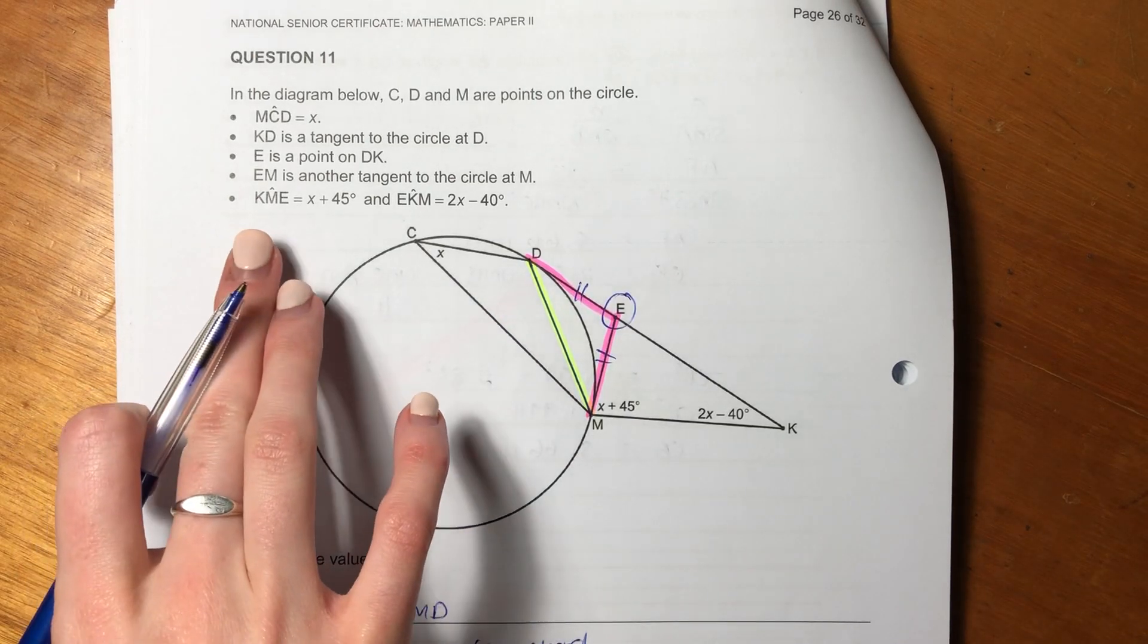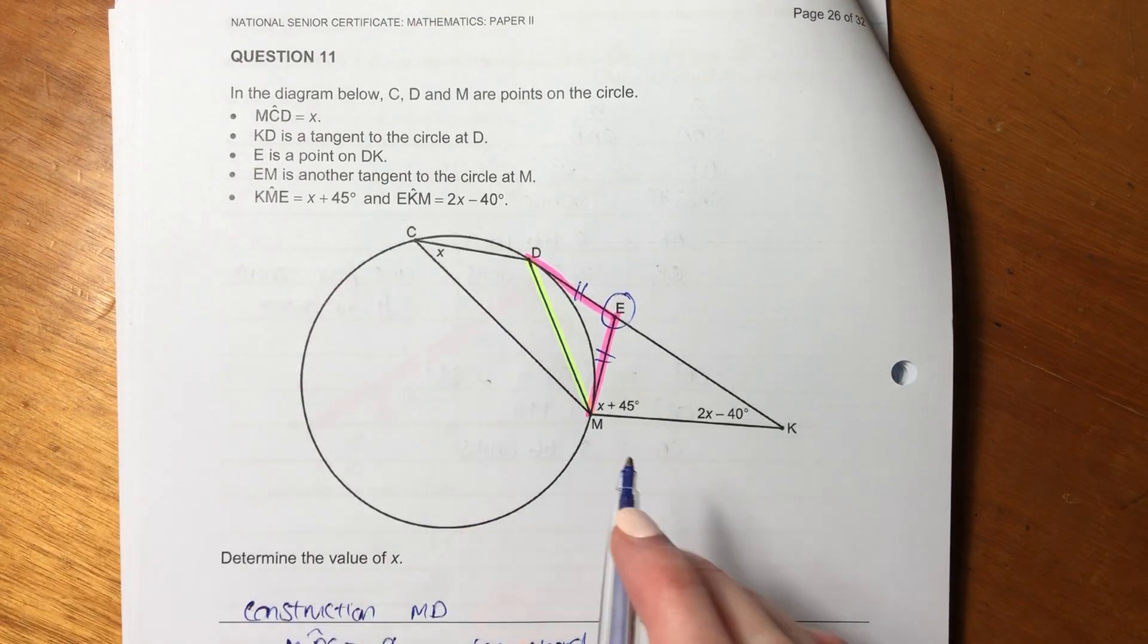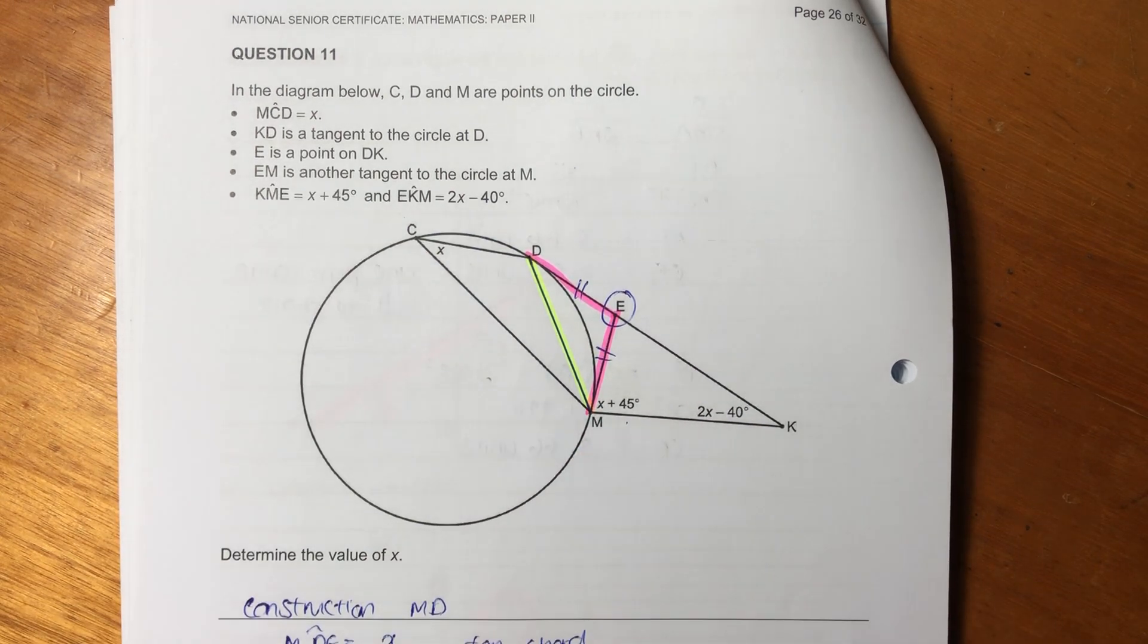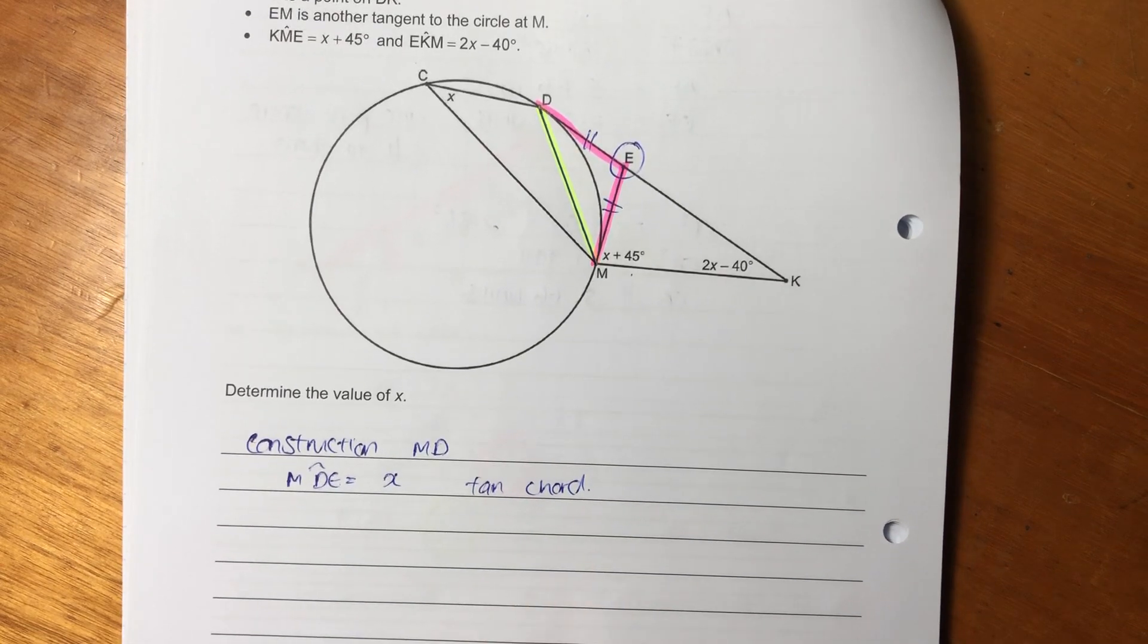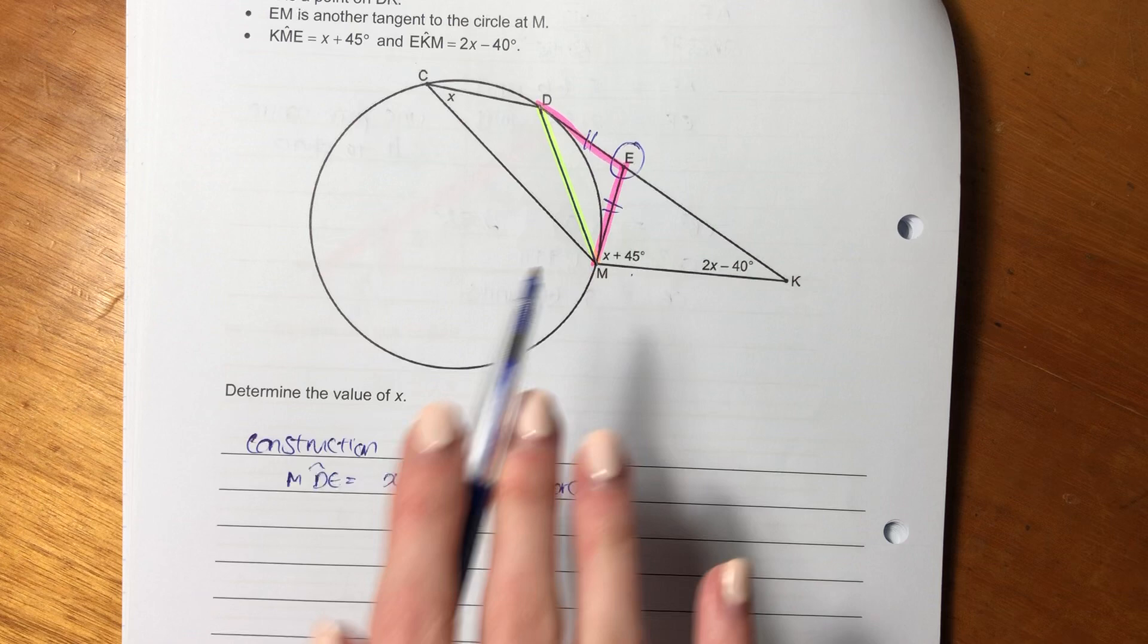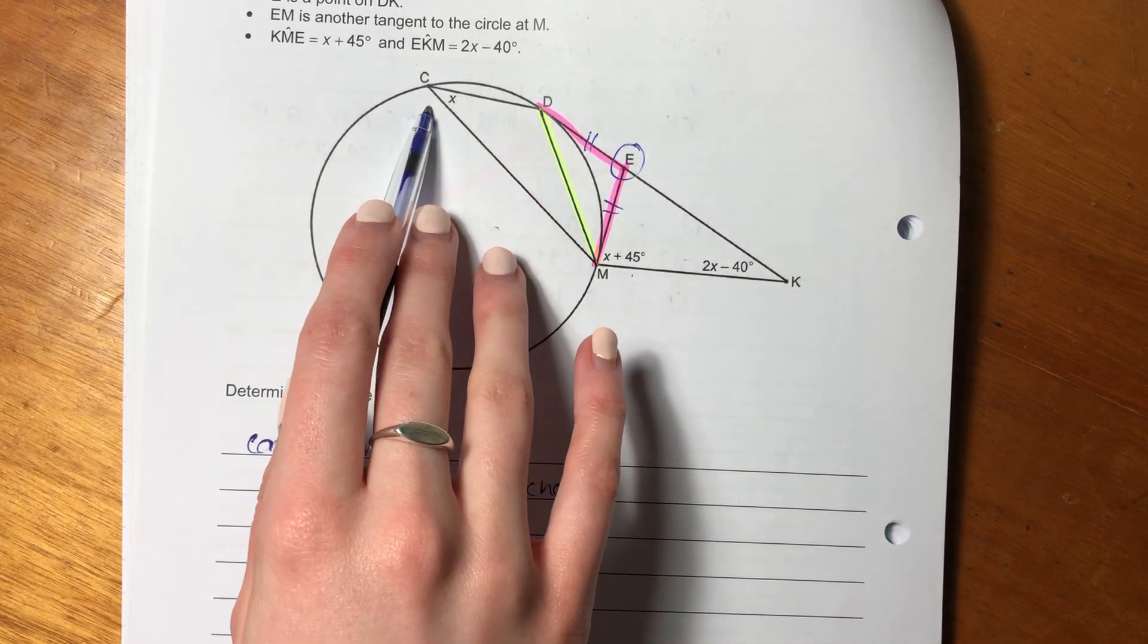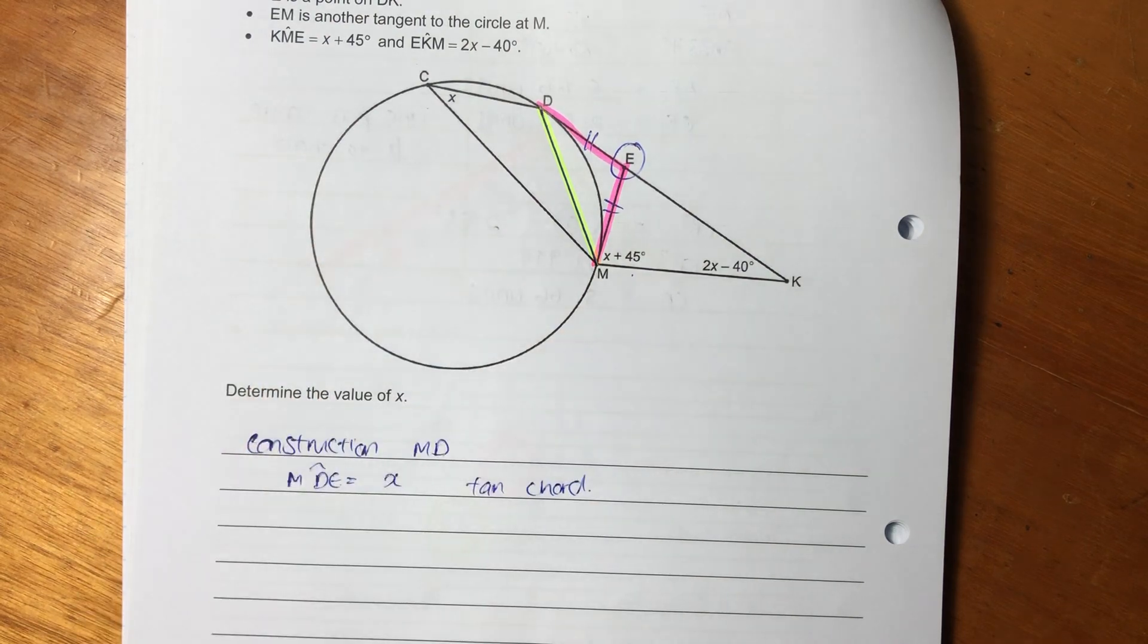Then it says angle KME is X plus 45 degrees, and EKM is 2X minus 40. So then the question asks us to determine the value of X. So I think it's a little bit easier to determine the value of X down here than necessarily up there, even though we'll use that now. I'll show you how we'll use that.